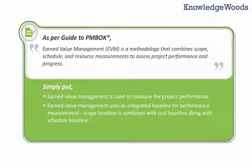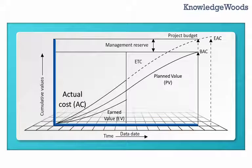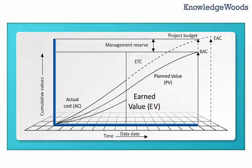Earned Value Management uses an integrated baseline for performance measurement. The Scope Baseline is combined with the Cost Baseline along with the Schedule Baseline. Planned Value always lies on the Budget at Completion line. Actual Cost of a project can be more or less than Planned Value. Earned Value can also be more or less than Planned Value.